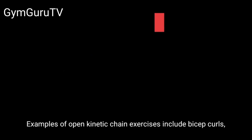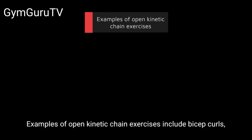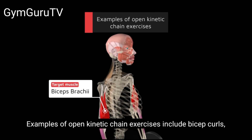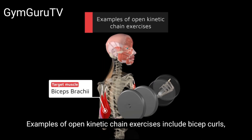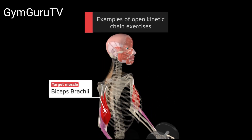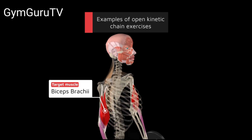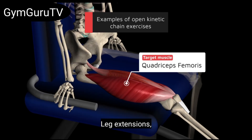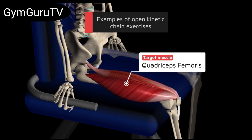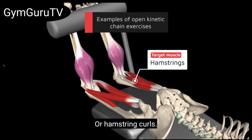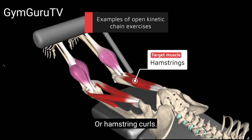Examples of open kinetic chain exercises include bicep curls, leg extensions, and hamstring curls.